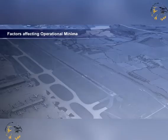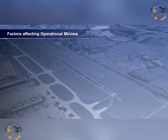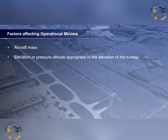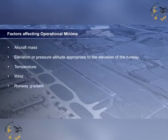In general, approach minima are developed by adding the effect of a number of operational factors to the OCA or H to produce, in the case of precision approaches, decision altitude or decision height DA or DH, and in the case of non-precision approaches, minimum descent altitude or height MDA or H. The factors taken into account when determining this calculation are: aircraft mass, elevation or pressure altitude appropriate to the elevation of the runway, temperature, wind, runway gradient, and condition of runway.